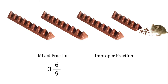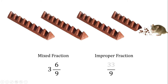How would we write that as an improper fraction? We start with our fraction line. The denominator is how many pieces are there in a whole chocolate bar — one through nine, so nine. The numerator for an improper fraction is how many pieces are there altogether. Counting by nines: 9, 18, 27, then 28, 29, 30, 31, 32, 33. So, 33 ninths. And again, these are equal — it's based on the same picture, so we know they're equal.